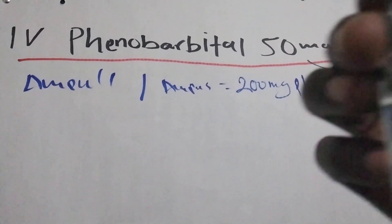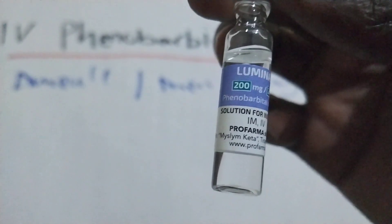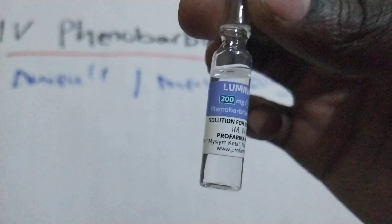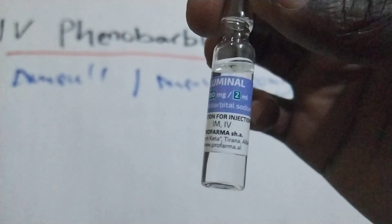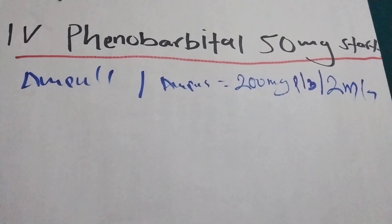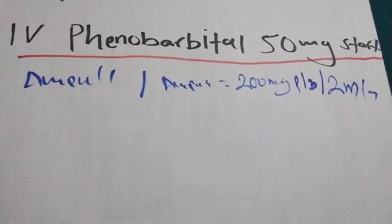This is our phenobarbital. This is phenobarbital in two mls. As you can see, what we are going to do, we are first going to dilute this drug.